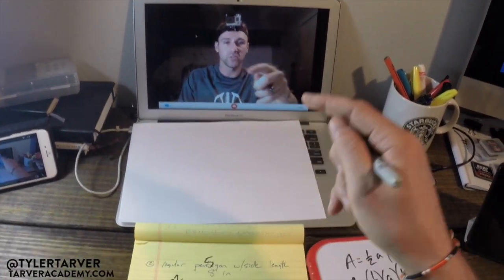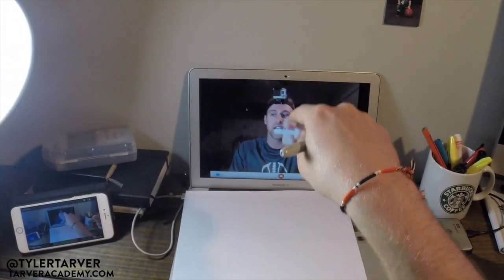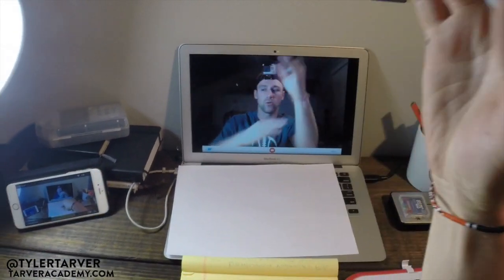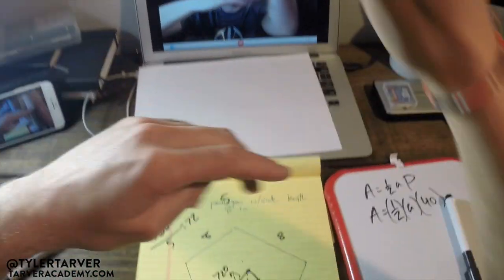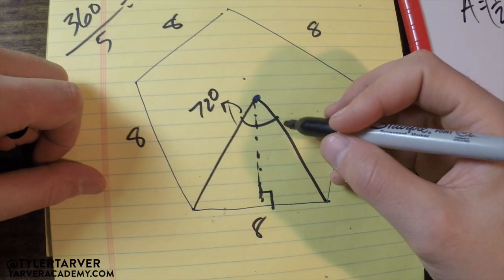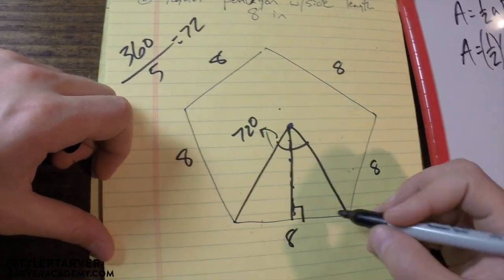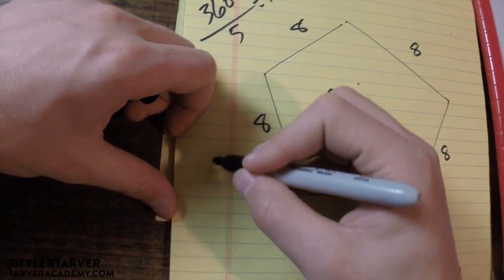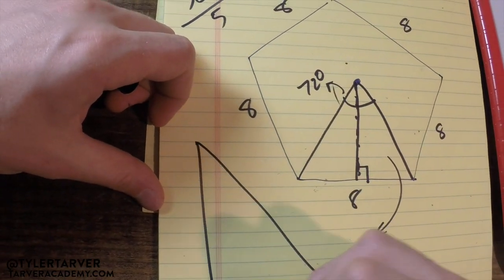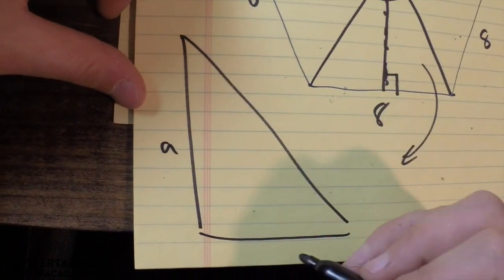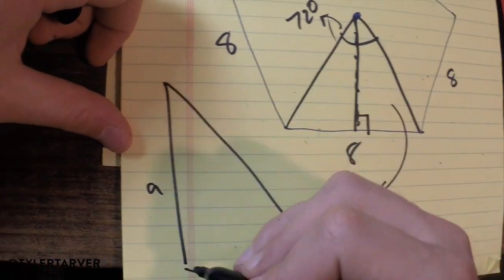Okay, so we got a right angle. I'm going to redraw this triangle a little bit bigger and a little bit less complicated. So there's your triangle, this is your apothem, what you want. We know that this is a right angle.